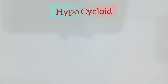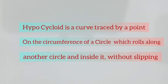Hi, welcome to the discussion of construction of hypocycloid. What do you mean by hypocycloid? Hypocycloid is a curve traced out by a point on the circumference of a circle, which rolls along another circle and inside it, without slipping. The main keyword here is: the circle rolls inside another circle.